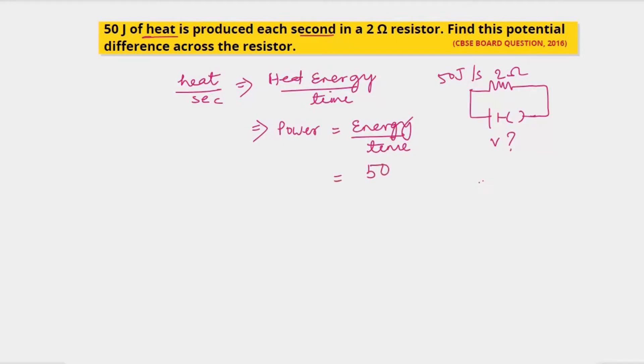So now here what is the energy that is produced? It is 50 joules in time is one second. So 50 joules per second is watt, so it is 50 watt. So power rating of this resistor is 50 watt.